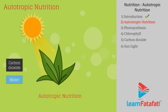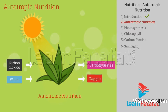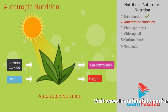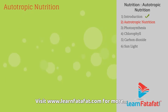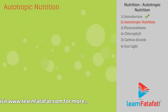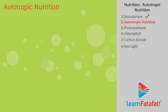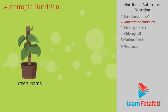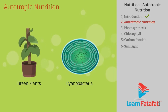The mode of nutrition in which organisms obtain food in the form of carbon dioxide and water is known as autotrophic nutrition. The organisms which fulfill their food requirements with autotrophic nutrition are called autotrophs. For example, green plants and some bacteria such as cyanobacteria.